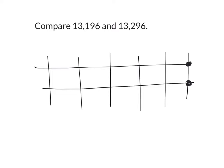If we want to compare 13,196, we have to write the 6 in the 1's place, the 9 in the 10's place, the 1 in the 100's place, the 3 in the 1,000's place, and the 1 in the 10,000's place. Similarly, for our next number, 6 in the 1's place, 9 in the 10's place, 2 in the 100's place, 3 in the 1,000's place, and 1 in the 10,000's place.